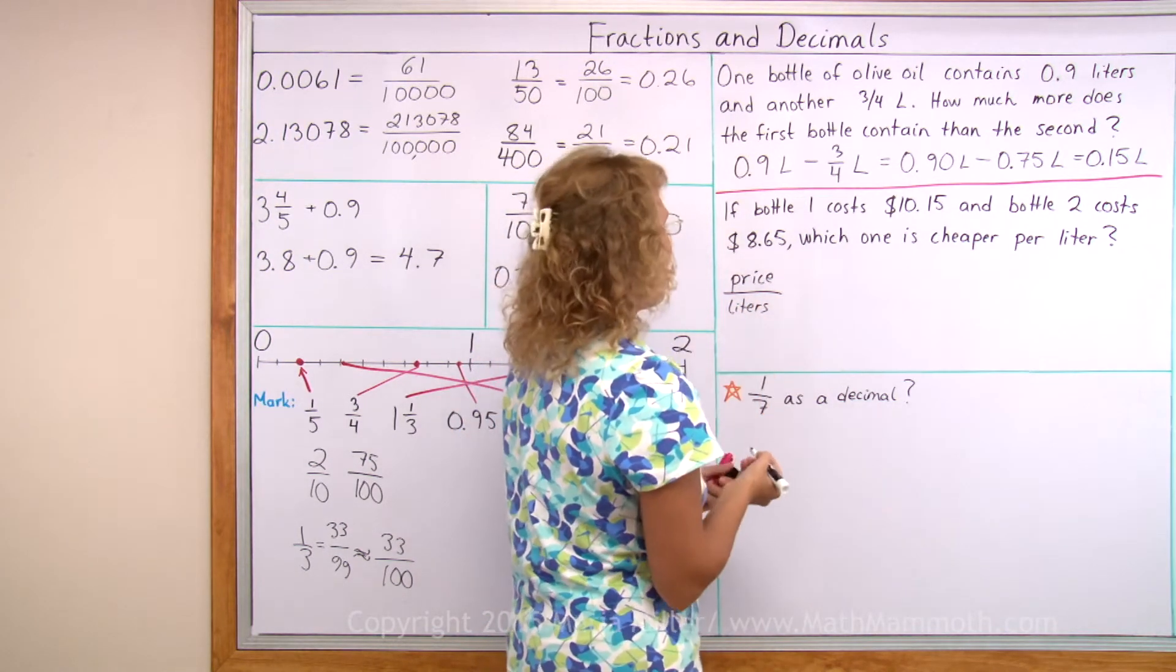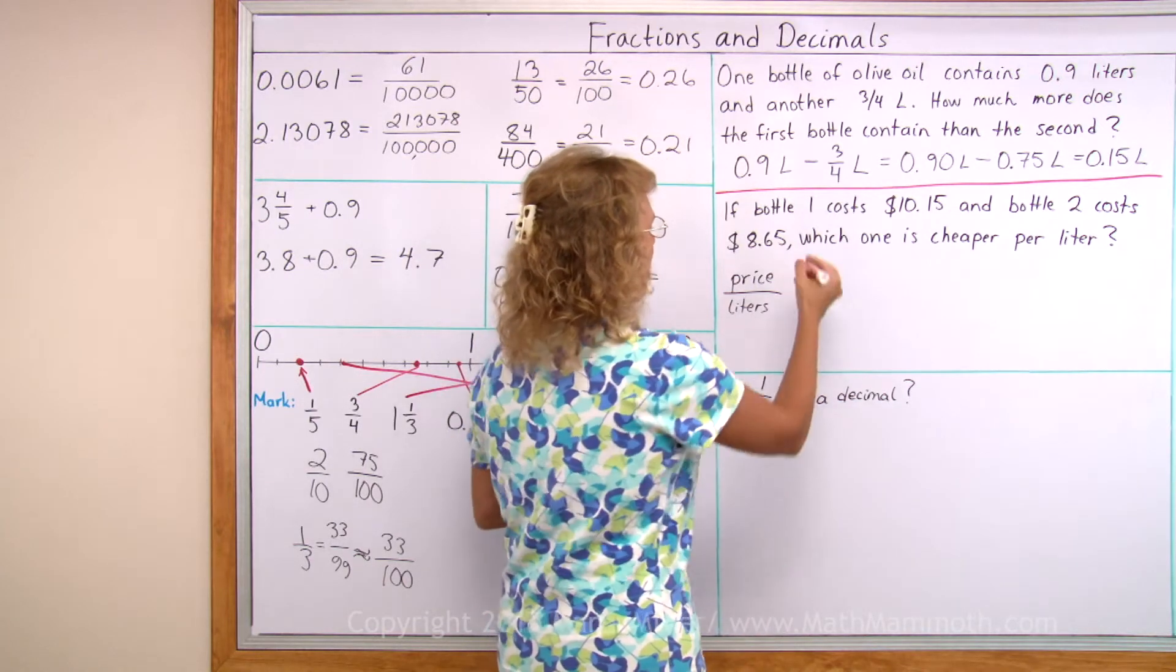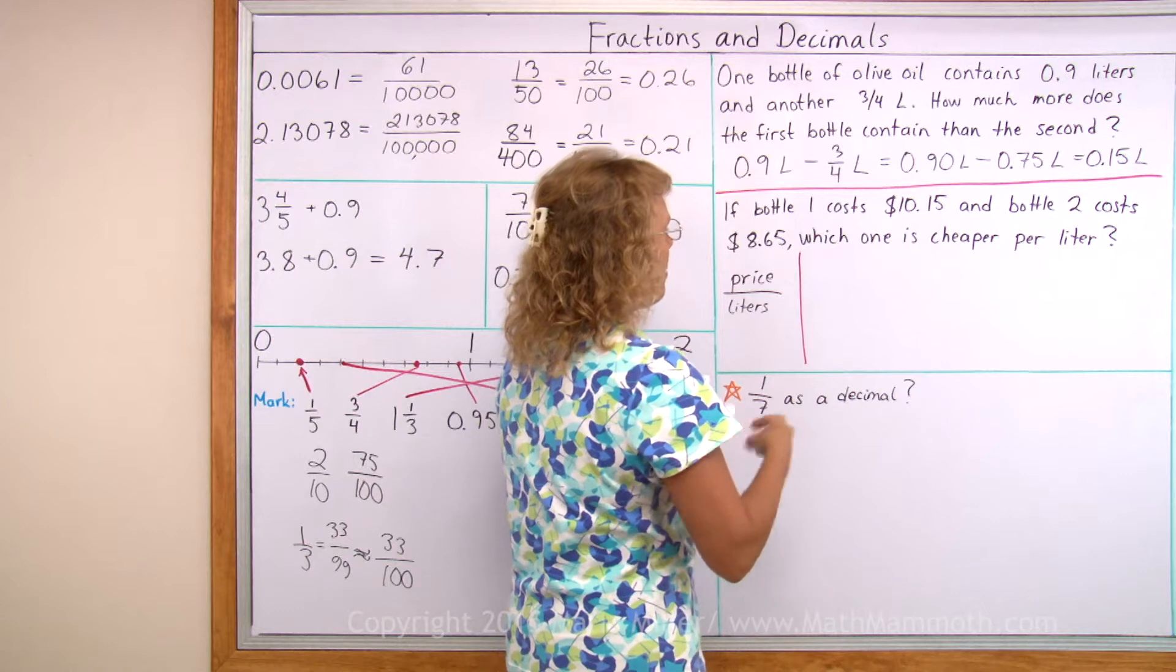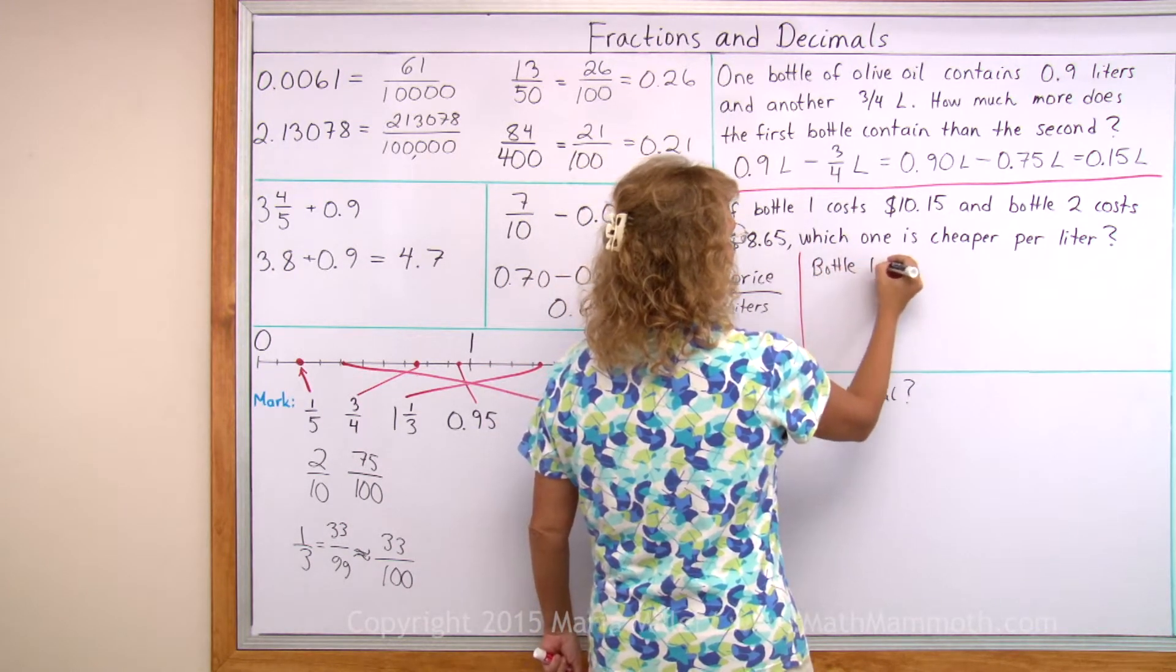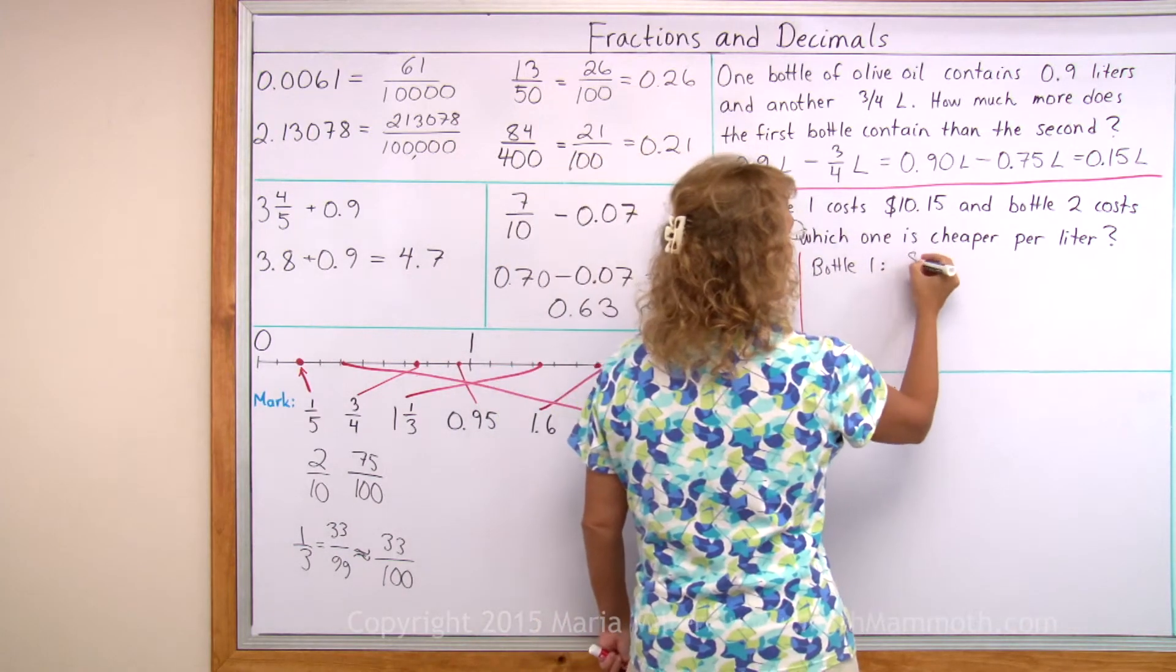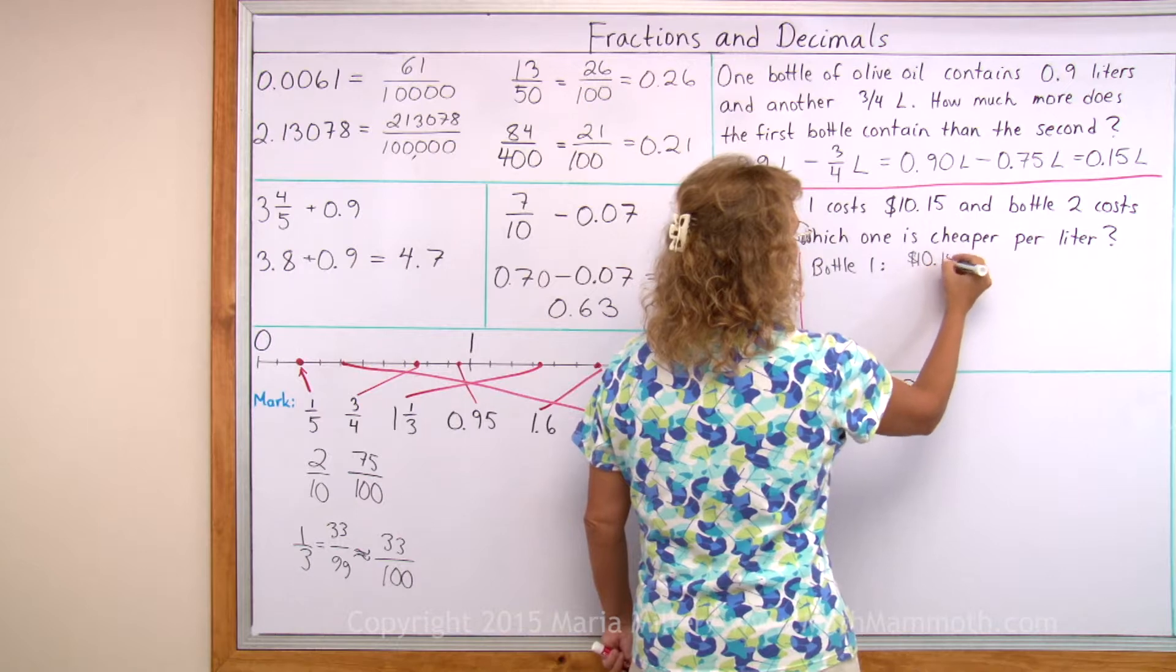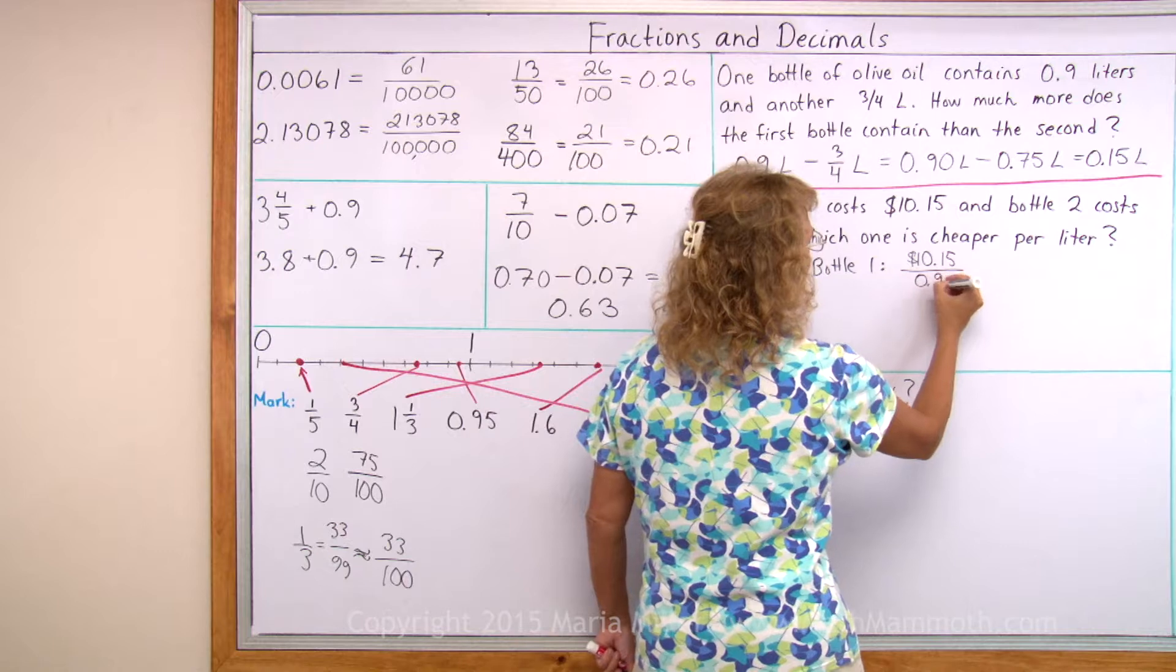So that's my basic formula I'm going to use. And for bottle one, it's right here, bottle one. My price per liter will be this, $10.15 divided by its volume, which was 0.9 liters.